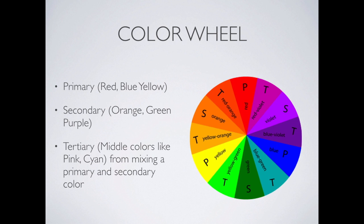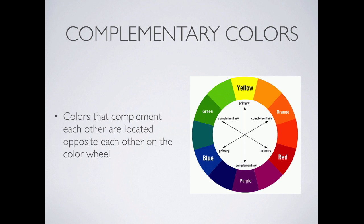The same thing applies today. We have our primary colors — red, blue, and yellow. Then we have secondary colors, which are orange, green, and purple, right in between the primary colors. In between those we get the secondary colors — the oranges, the greens, and the purples, sometimes called violet. Then we have the tertiary colors, which are the ones in between the primaries and the secondaries, and we can keep breaking the color wheel down further and further.